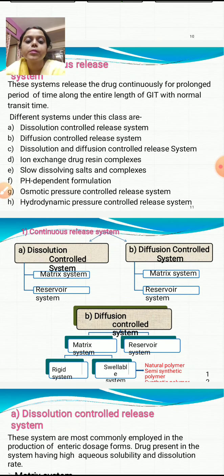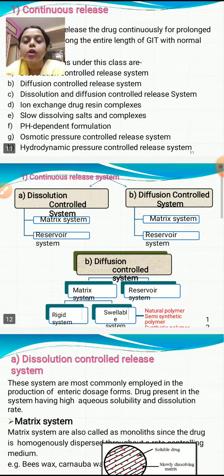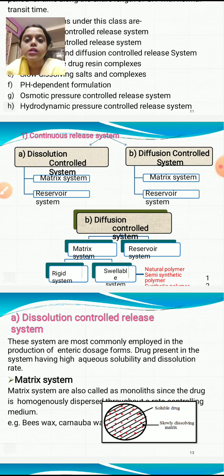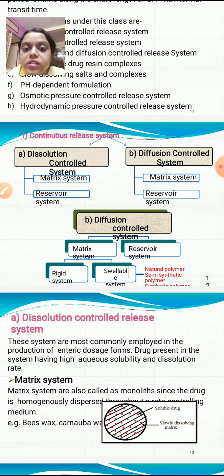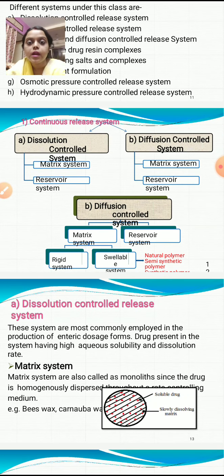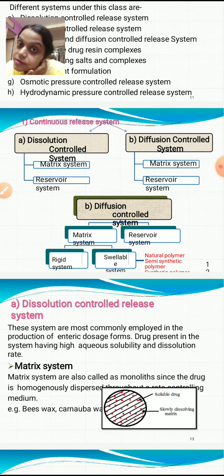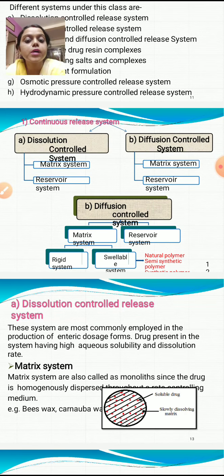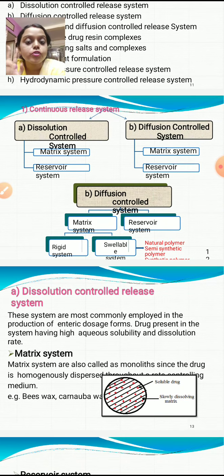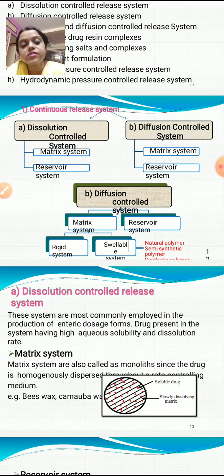As shown in the chart, under dissolution controlled we have matrix system and reservoir system. Under diffusion controlled system we again have matrix system and reservoir system. Under the matrix system for diffusion controlled, there are two subtypes: rigid system and swellable system. The swellable system consists of natural polymers, semi-synthetic polymers, and synthetic polymers.